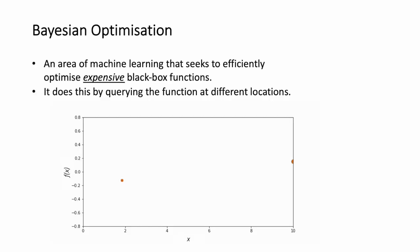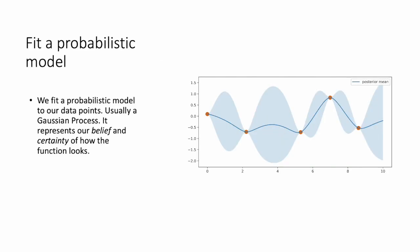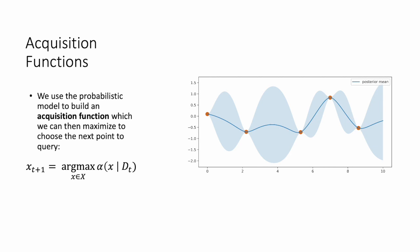Bayesian optimization is the area of machine learning that seeks to efficiently optimize expensive black-box functions. We do this by querying the function at different locations — there is no gradient information and we want to be as time-efficient as possible, so we want very few iterations. This is usually done by fitting a probabilistic model to the data, usually a Gaussian process, which represents our belief and certainty of how the function looks. Using this probabilistic model, we build an acquisition function which is then maximized to choose the next point we want to query.